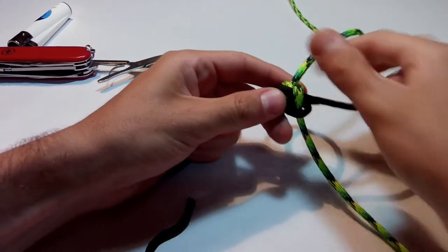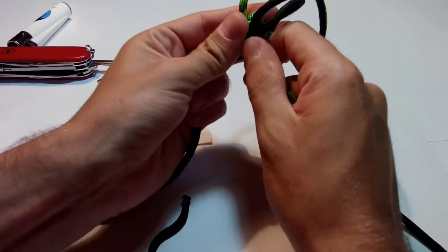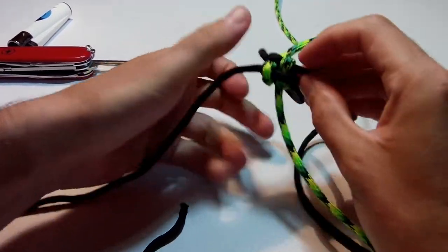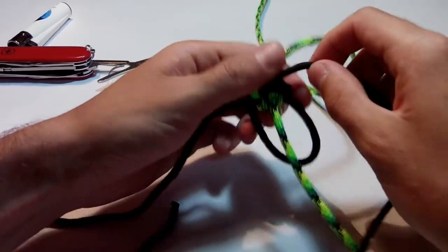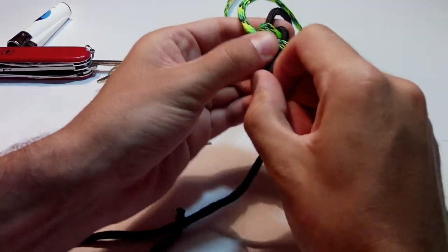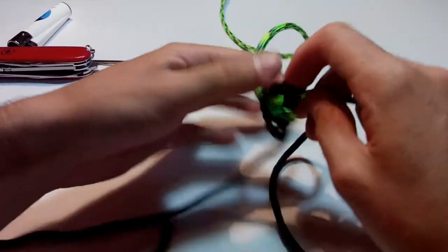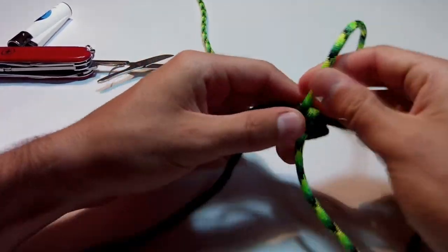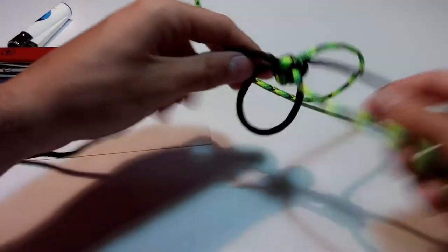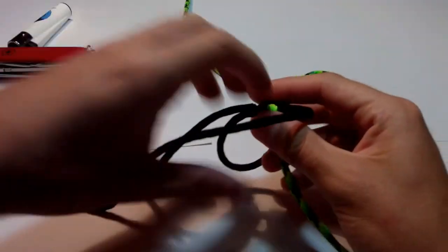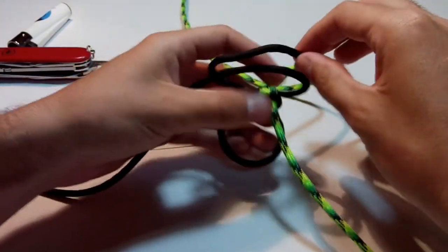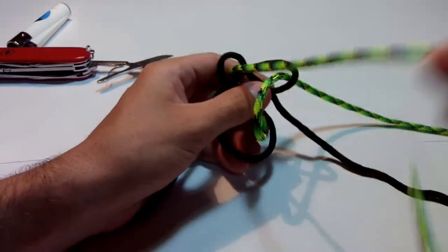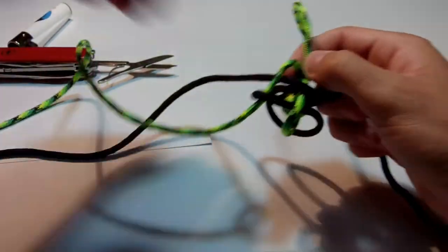From now on you should give it a really good squeeze because you want to maintain that square shape. Let's do the same thing - the right goes to the left, the left goes to the right. This one goes over and in, over and in, tie everything.